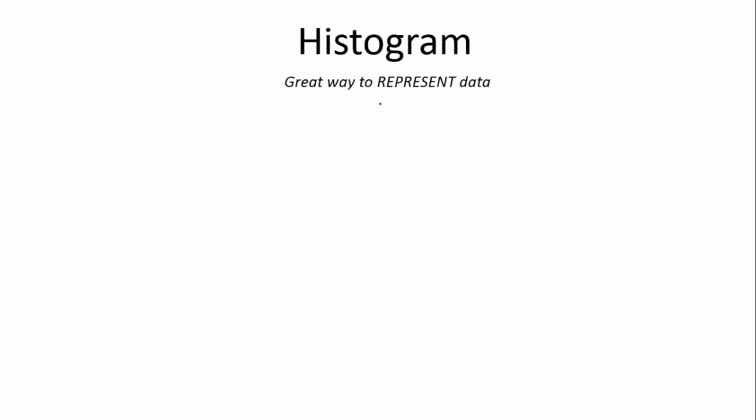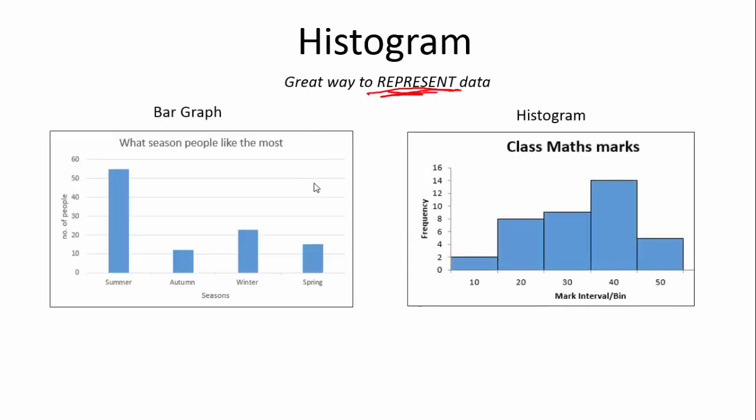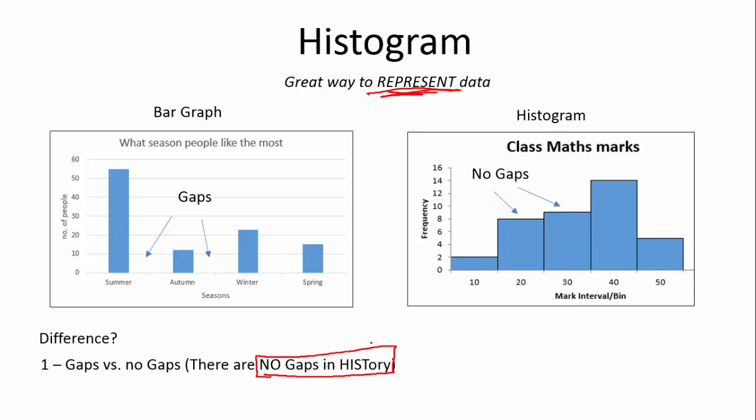This is a great way to represent data, make it viewable. Previously we had a bar graph and now we have histograms. What is the difference between the two? The first thing to remember, and this is the thing that I always used when I was at school, a bar graph has gaps and a histogram has no gaps. You'll notice that there's gaps over there and there's no gaps there. I always like to remember, there are no gaps in history. This little saying always reminded me of the fact that histograms never had gaps and bar graphs had gaps.